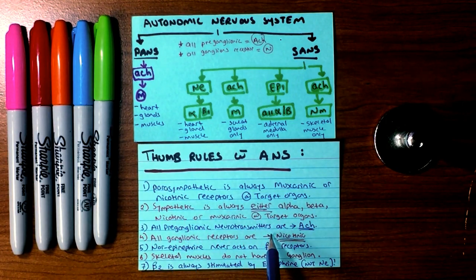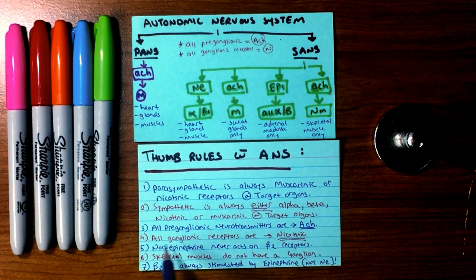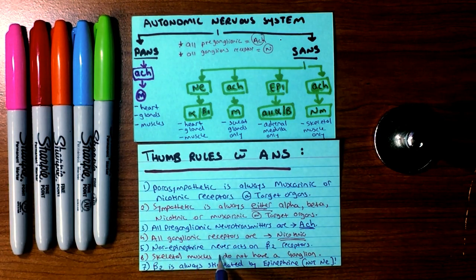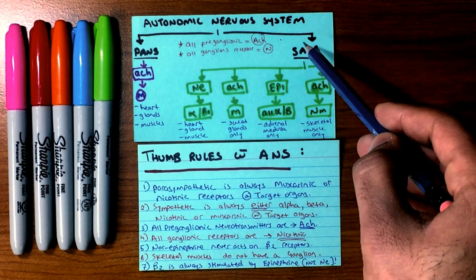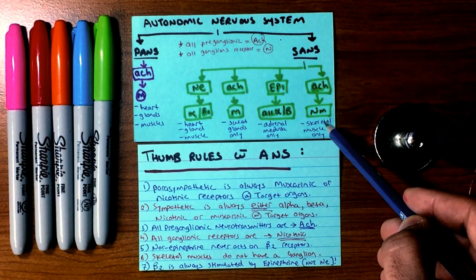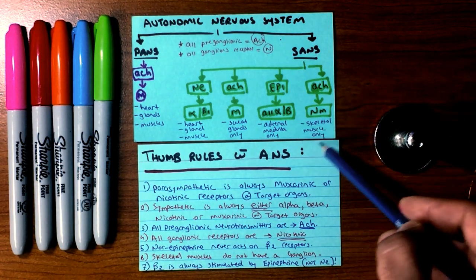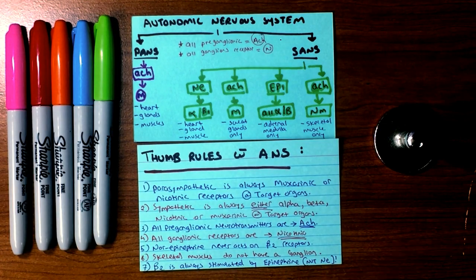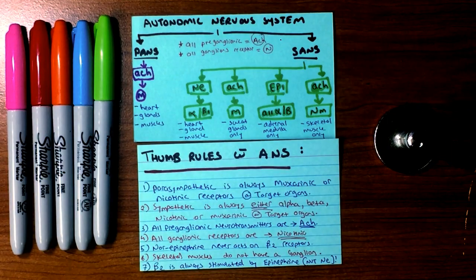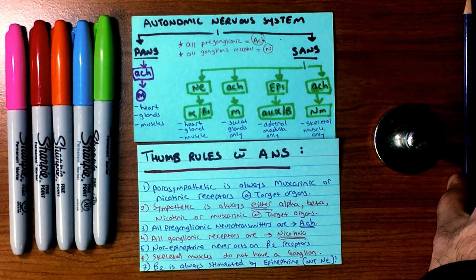The thumb rules to understand: parasympathetic always uses muscarinic or nicotinic receptors at target organs. Sympathetic uses alpha, beta, nicotinic, or muscarinic at target organs. All preganglionic neurotransmitters are acetylcholine, and all ganglionic receptors are nicotinic. Norepinephrine never acts on beta-2 adrenergic receptors. Skeletal muscles have no ganglion — they have a direct route from the CNS through neuromuscular junctions to the target organs. Beta-2 is always stimulated by epinephrine, not norepinephrine.